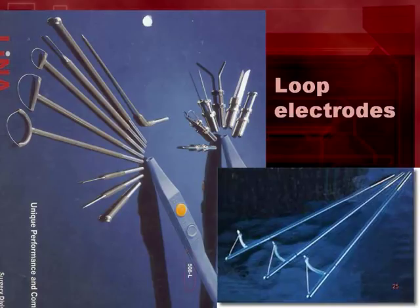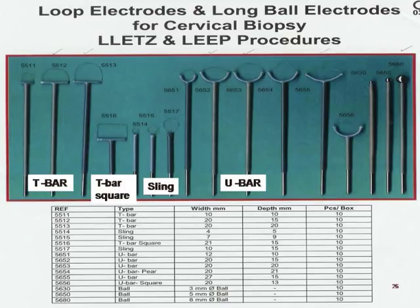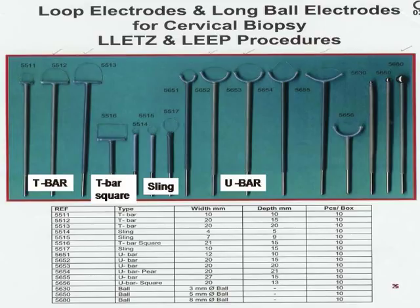One of the most important instruments for LEEP is the loop electrode. There are various sizes and types of loop electrodes; the size is determined by the width and height of the loop, which in turn determines the size of cone removed from the cervix. These loop electrodes are connected to a generator. There are four types of loop electrodes: T-bar, T-bar square, sling, and U-bar. T-bar and U-bar loop electrodes are the most commonly used. Apart from loop electrodes, there are also ball electrodes used to secure hemostasis at the end of LEEP, available in 3 mm, 5 mm, and 8 mm sizes.